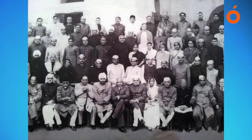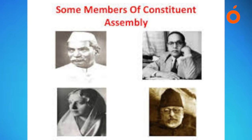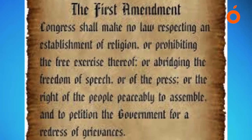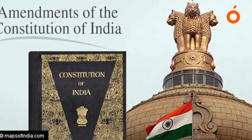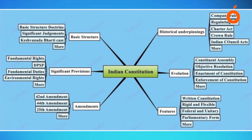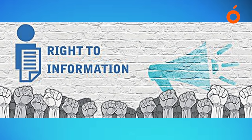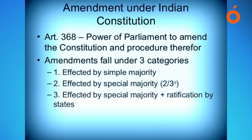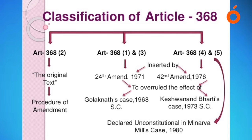In the Golaknath case of 1967, the Supreme Court reversed its earlier stand. The constitutional validity of the 17th Amendment Act, which inserted certain state acts in the Ninth Schedule, was challenged. The Supreme Court ruled that fundamental rights are given a transcendental and immutable position and hence parliament cannot abridge or take away any fundamental rights. A constitutional amendment act is also a 'law' within the meaning of Article 13 and hence would be void if it violates any fundamental rights. The parliament reacted to this judgment by enacting the 24th Amendment Act of 1971. Subsequently, in the Kesavananda Bharati case of 1973, the Supreme Court overruled its judgment in the Golaknath case.